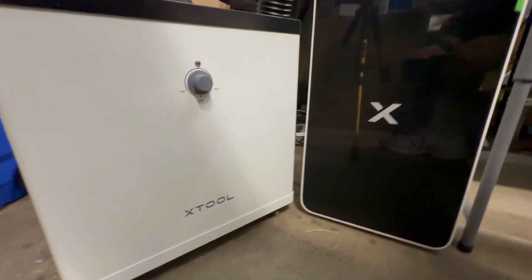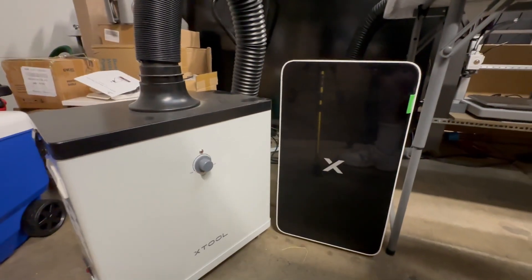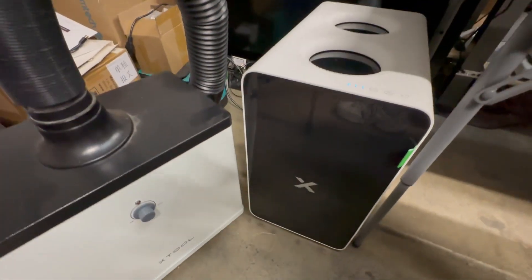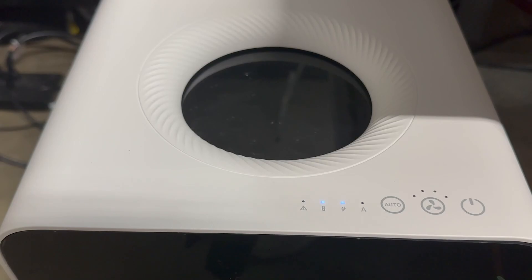Now let's take a look at the size difference between the old extractor and the new one. It's a little bit bigger. Almost looks like a beefy PC case. Now it is compatible with certain X-Tool products. You could do a manual override to set your fan speed if you so choose. But I'm going to keep mine on auto because I am using the F1 Ultra and it will automatically set the fan speed if I so choose in the software, depending on what type of engraving or cut that I am doing.